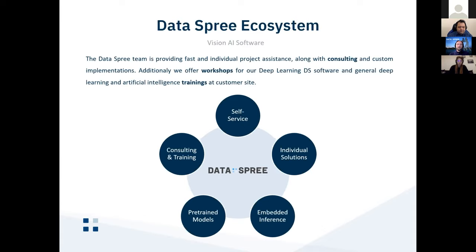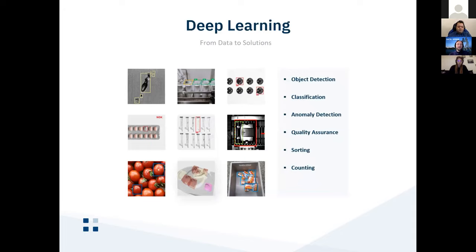As Farshid said, if you use a pre-trained model trained on different data than your application, you might run into trouble. Diving into deep learning for computer vision — we have object detection, classification, and anomaly detection. The main areas we apply this are quality assurance (the biggest one), and sorting and counting, where we especially need techniques like tracking. Today we're focusing on the quality assurance task.